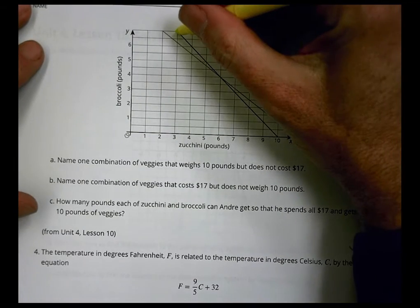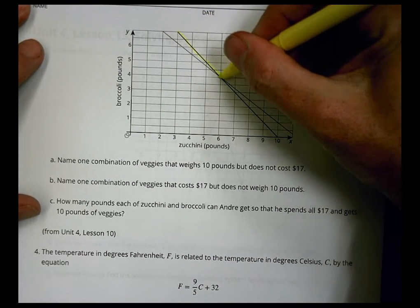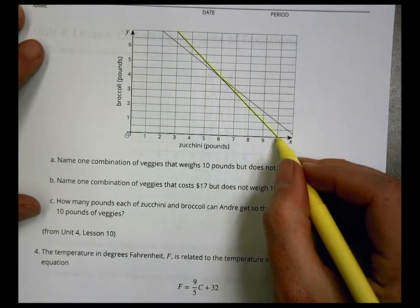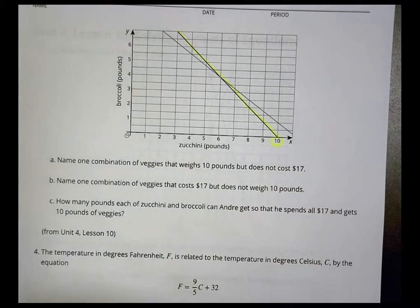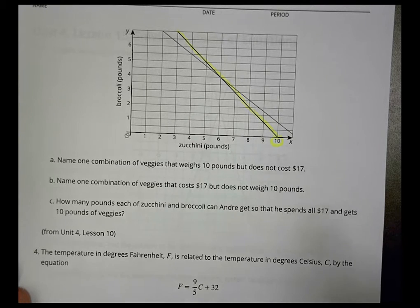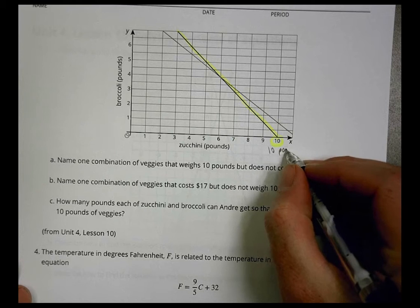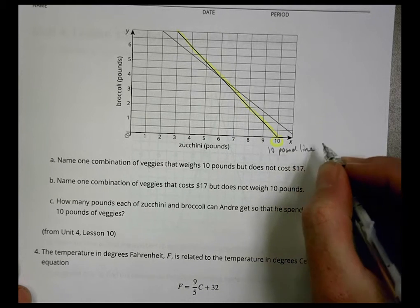On this first line, we'll call this the yellow line here. We see that it goes all the way down to the number 10. Notice that it gets to 10, which tells me this is our 10-pound line.